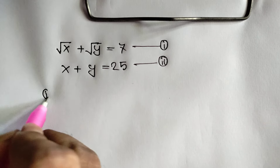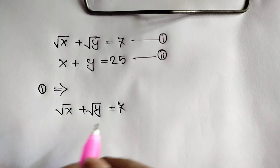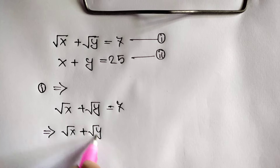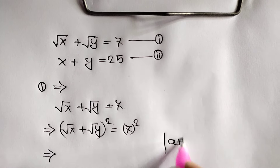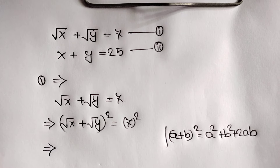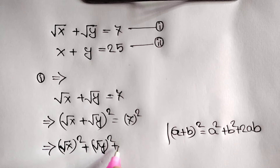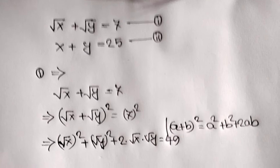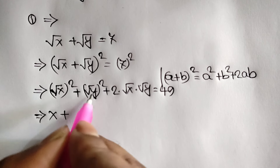From equation number 1, we have square root of x plus square root of y is equal to 7. Squaring both sides, we get (√x + √y)² = 7². We know (a + b)² = a² + b² + 2ab, so applying this rule: (√x)² + (√y)² + 2·√x·√y = 49. The squares cancel the square roots, leaving x plus y plus 2√(xy) = 49.